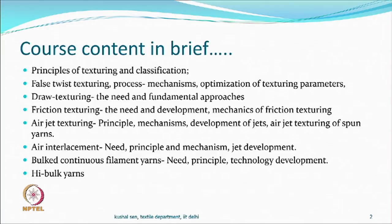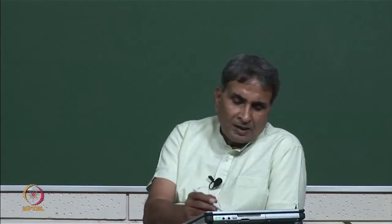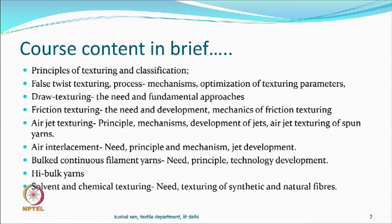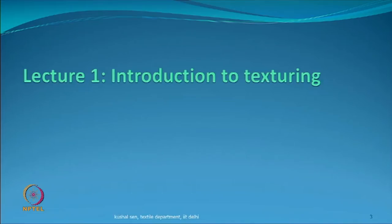There is a category called high bulk yarns, which are used in daily life, particularly in winter knitting yarns. The synthetic material that looks like woolen yarn is done through the high bulk process. We will also spend some time on other methods of texturing using solvents or chemicals, rather than only dry heat or air jet mechanical methods. That is the course content in brief.